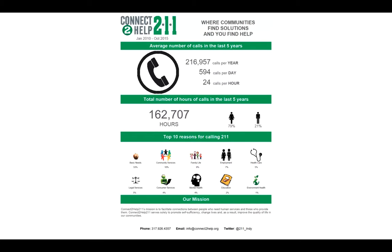I'm going to take you through four visualization examples created during this project. The first was done by Benedetta. Her goal was to create an advertisement - something emotive that gets the attention of people visiting their website or legislators, so people can understand the magnitude of the problem and the difficulty they're having connecting people to the services they need. We started with overall KPI numbers: 217,000 calls a year, almost 24 calls per hour. People don't understand the level of service this charity actually provides - it's a great way to use infographics and data visualization to get that word out.